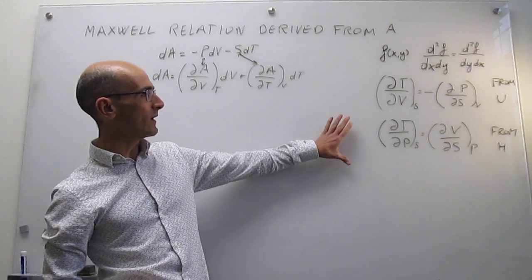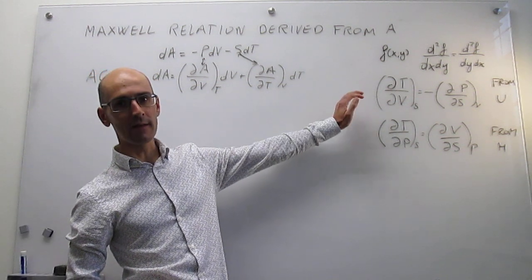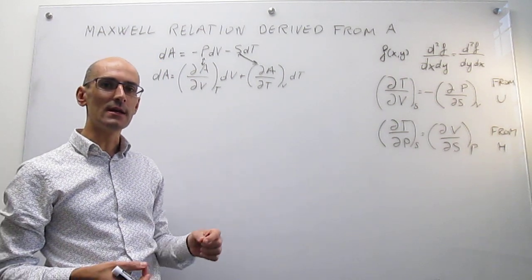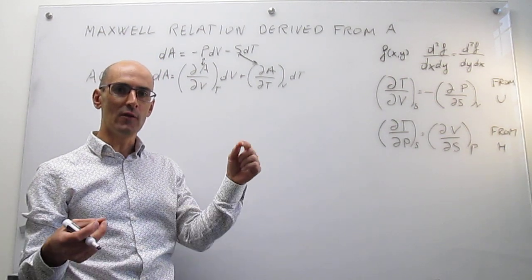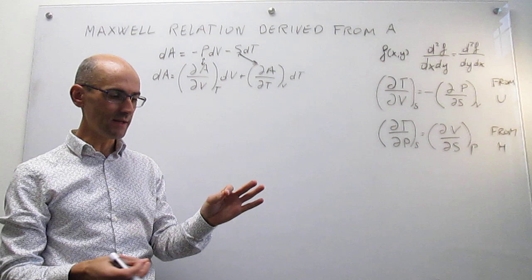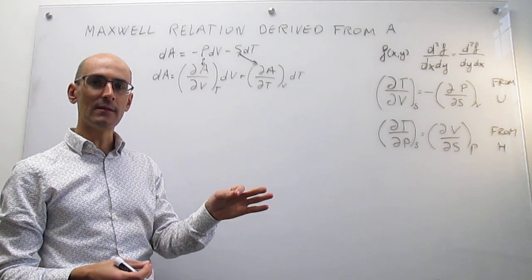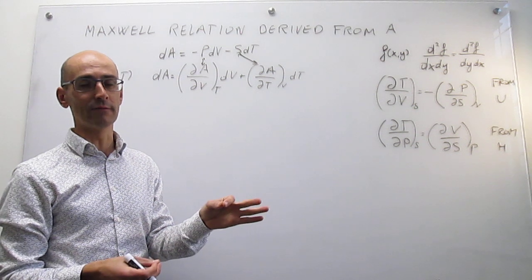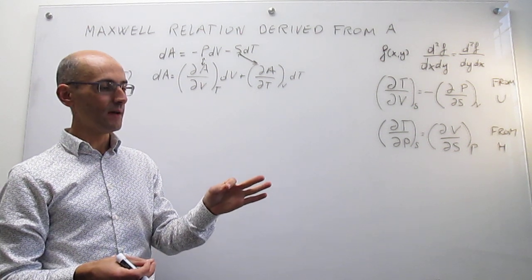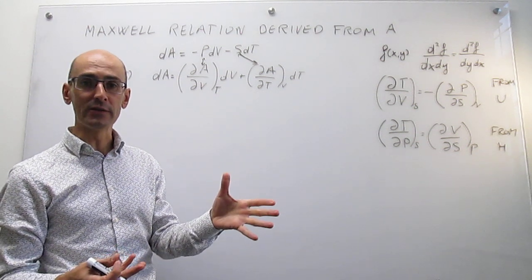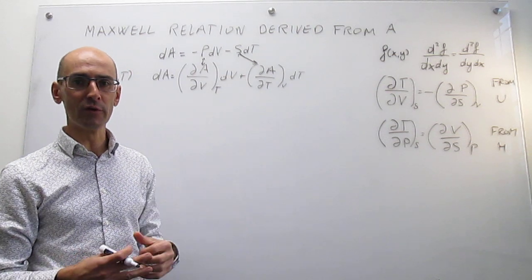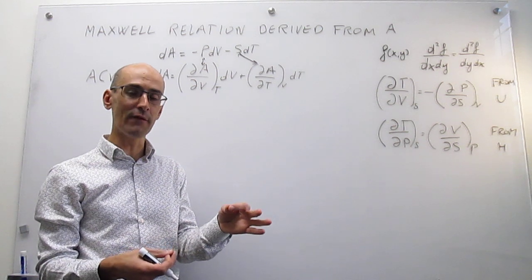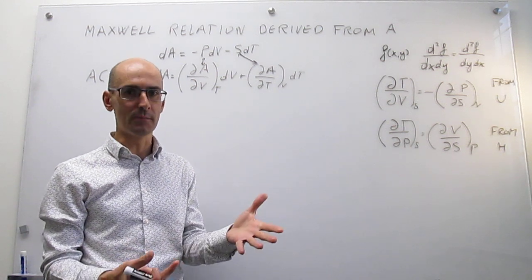The Maxwell relation exploits the fact that the Helmholtz energy is a state function. That means that to calculate changes from an initial state to a final state, the path doesn't matter — the only thing you need to know is the value of the function at the initial and final states. Another way to say this is that the change in the function is path independent.